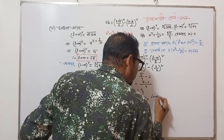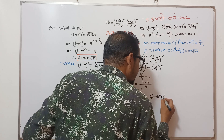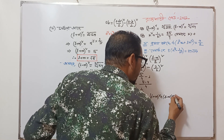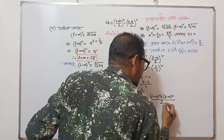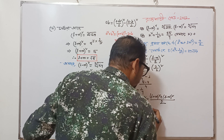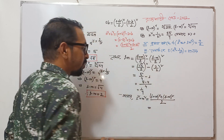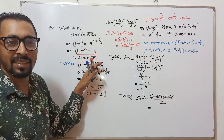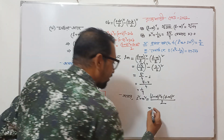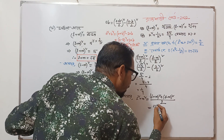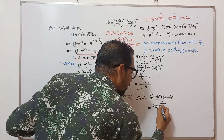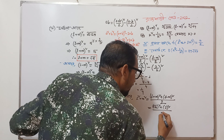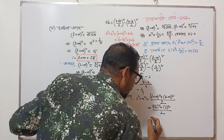L plus M whole square plus L minus M whole square divided by 2. L plus M is root over 5, so root over 5 whole square, and that gives 2 divided by 2.